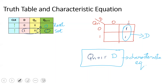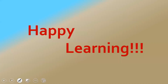The characteristic equation Qn+1 = D is important — remember it and you can answer exam questions. This concludes the D flip-flop. Next we will cover the JK flip-flop and T flip-flop. If you have any doubts, please ask in the comment section. Thanks for watching — happy learning!